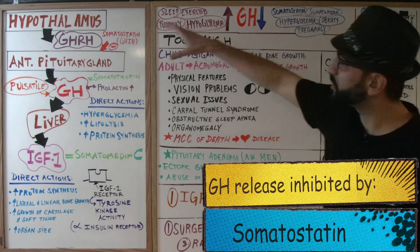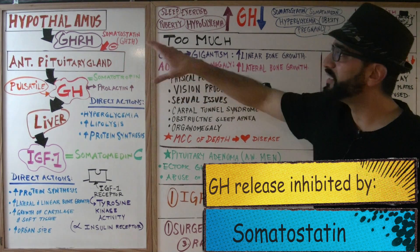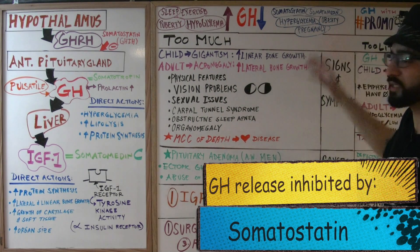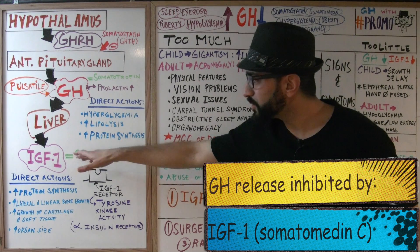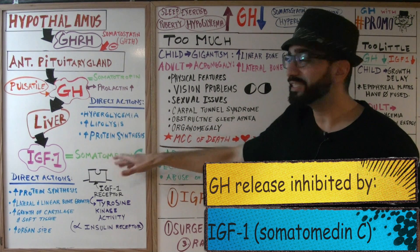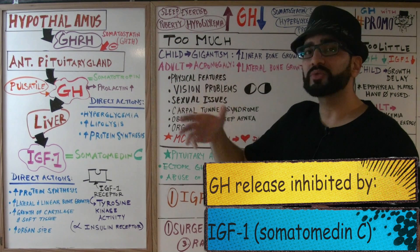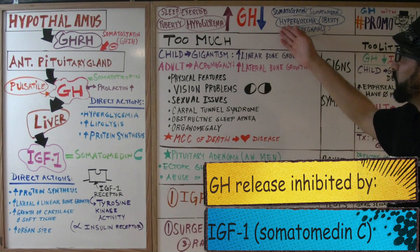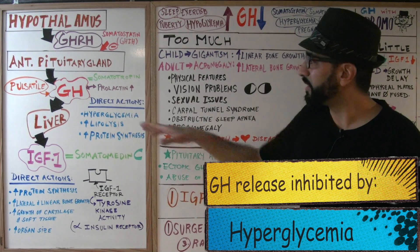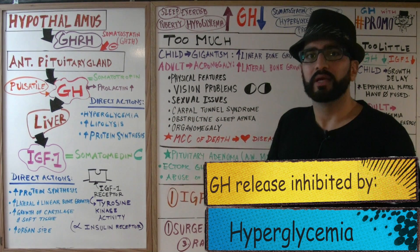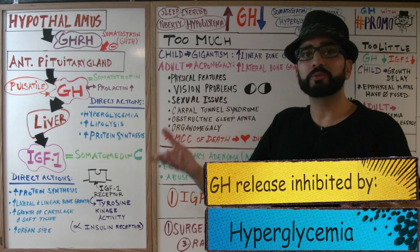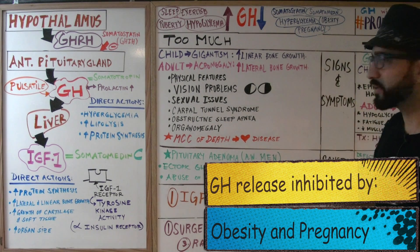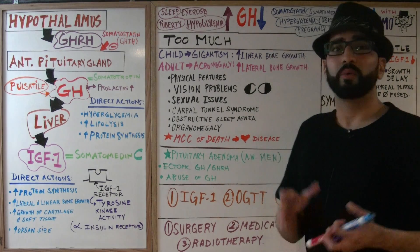Things that decrease growth hormone include somatostatin, which works on the anterior pituitary to decrease the response to GHRH. IGF-1 (somatomedin C) provides negative feedback by going back to the hypothalamus to stimulate more somatostatin release. Hyperglycemia also provides negative feedback — when growth hormone raises blood glucose, that signals the anterior pituitary to reduce growth hormone output. Obesity and pregnancy also decrease growth hormone.